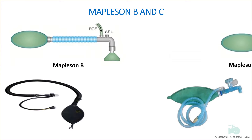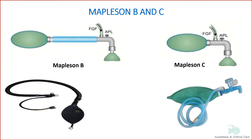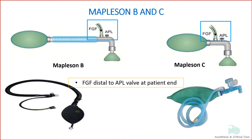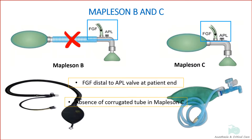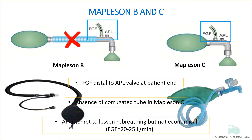Mapleson B and C are similar in construction, with the fresh gas flow entry located at the patient end of the circuit, distal to the expiratory or APL valve. Corrugated tubing is omitted in Mapleson C, as shown in the diagram. This was done to reduce re-breathing of alveolar gas by shifting the fresh gas entry to near the patient. They are not commonly used in anesthetic practice because a high flow of gases is needed to prevent re-breathing of CO2.